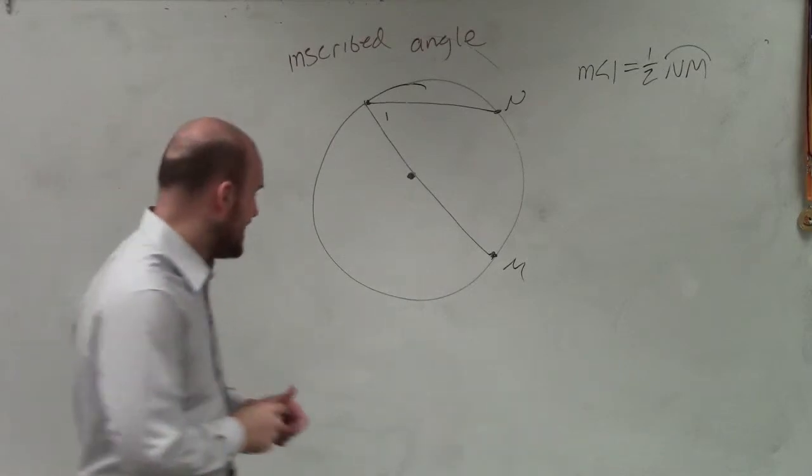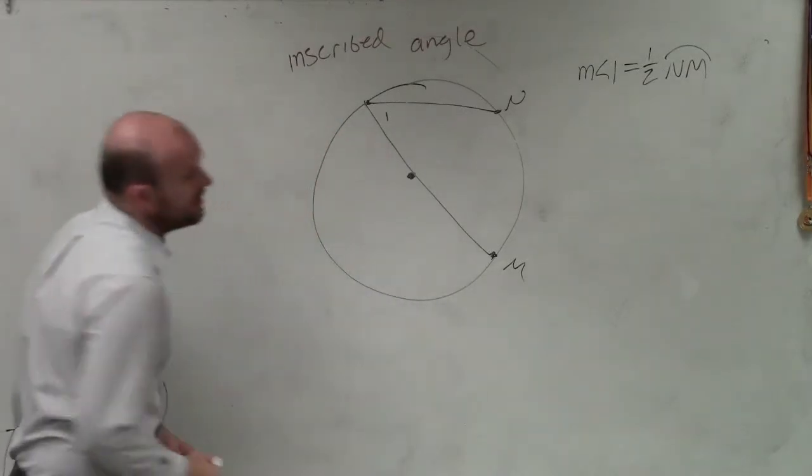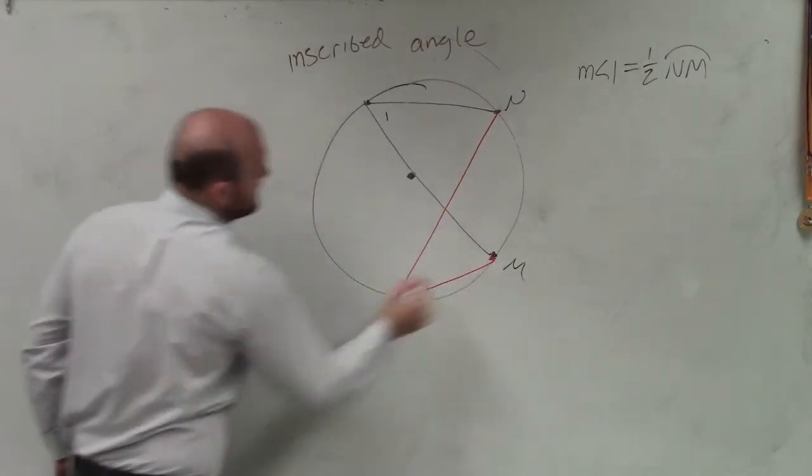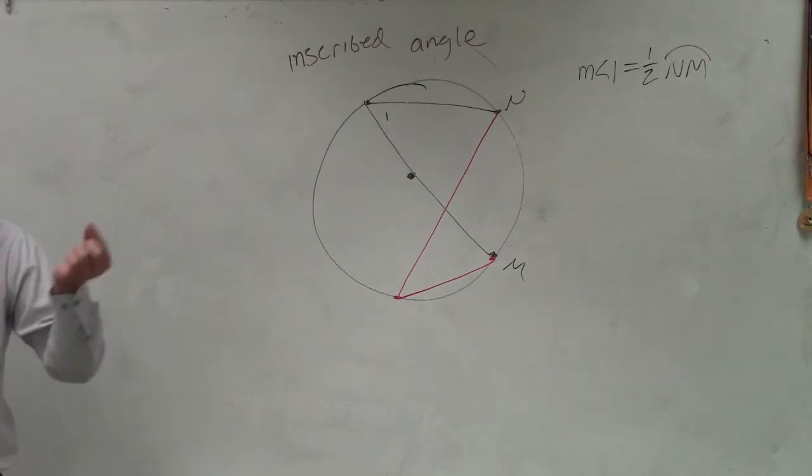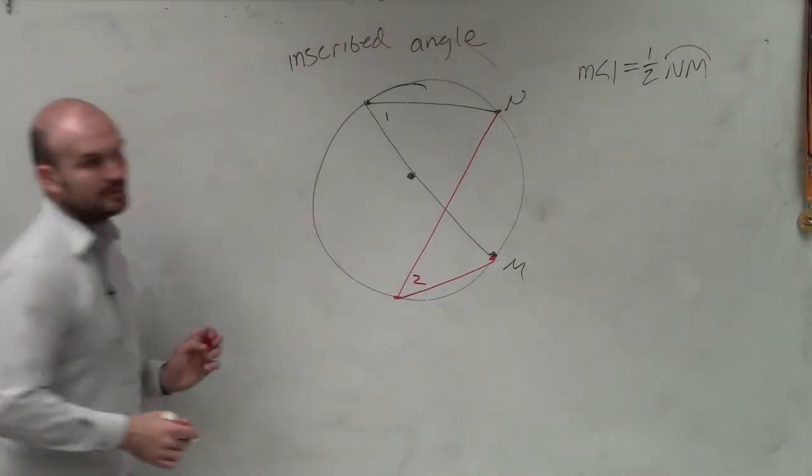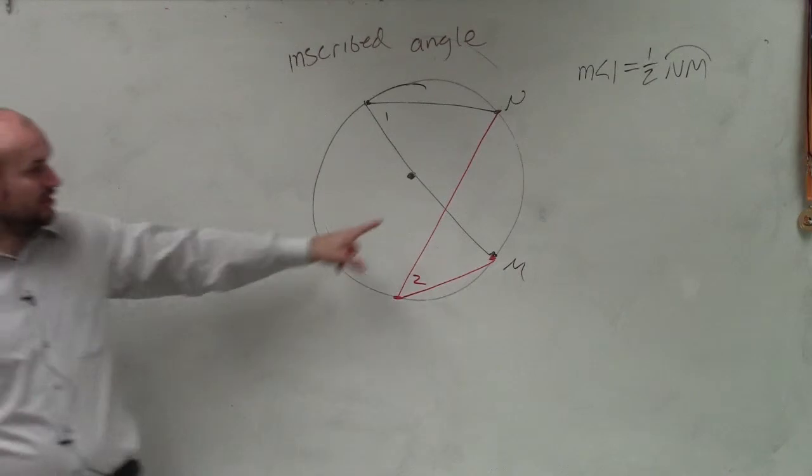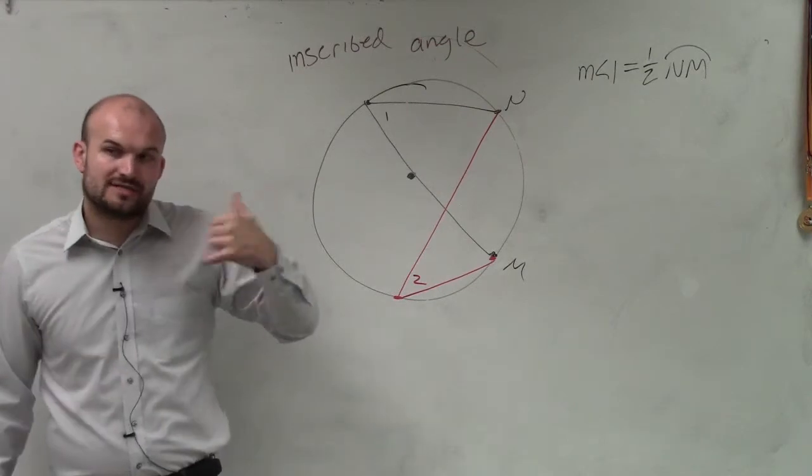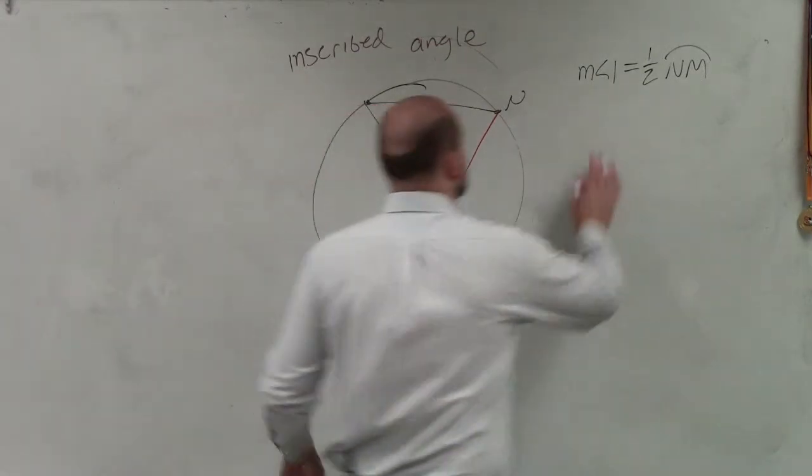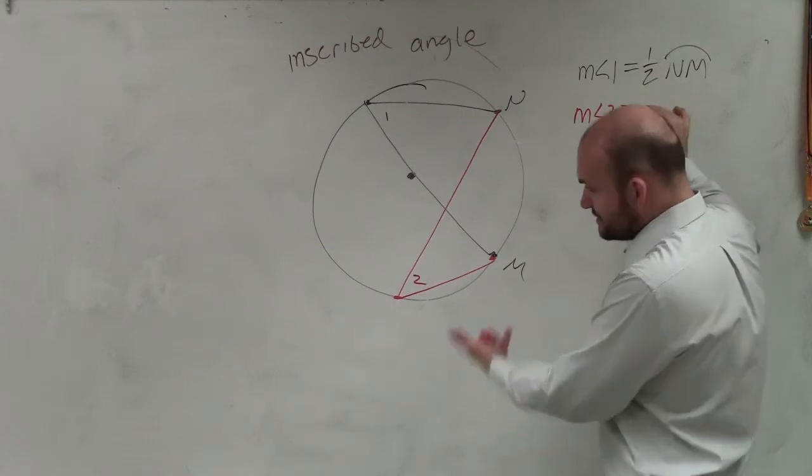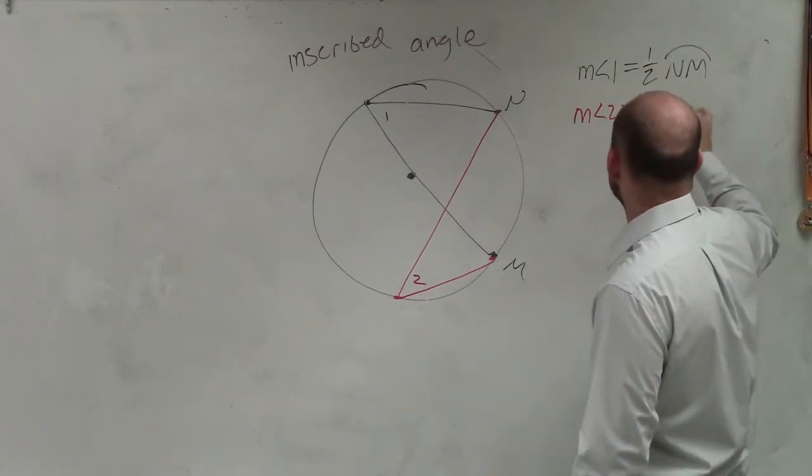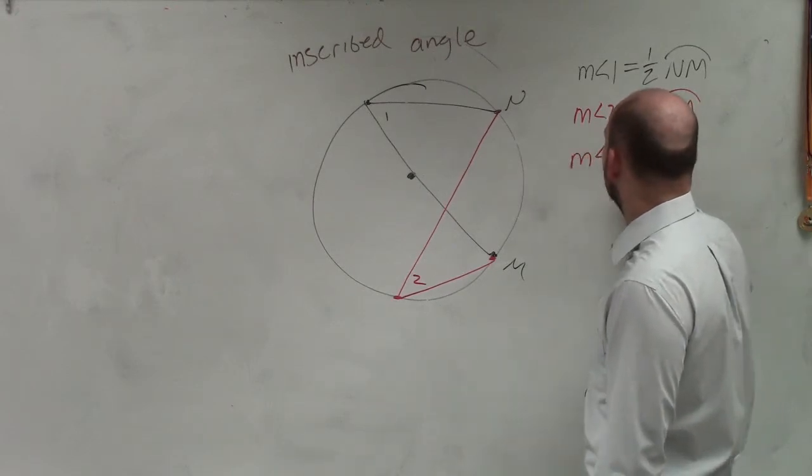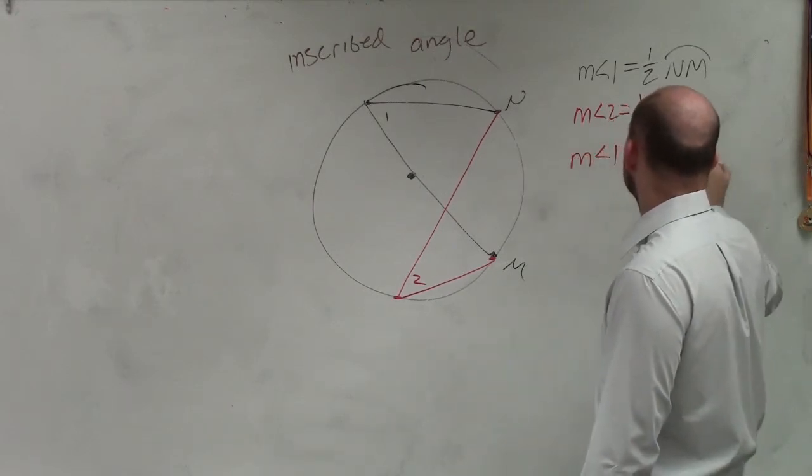So what I want you guys to understand is if I create another inscribed angle, it doesn't matter where that angle is, as long as it's an inscribed angle. And if that inscribed angle has the same endpoints, is this still an inscribed angle in the red? Yes. It has endpoints on the circle and it has a vertex on the circle. What I want you guys to understand is that measure of angle 2 is equal to the same formula. It's an inscribed angle, so that's 1 half the arc. So therefore, I can now say that the measure of angle 1 is equal to the measure of angle 2.